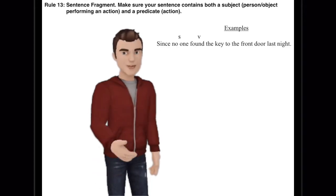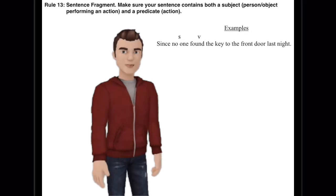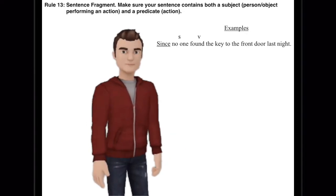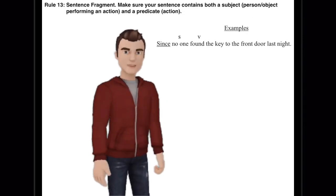The first example would be, since no one found the key to the front door last night. Now in this one, it has a subject and a verb, no one found, but there's another word right in front of that, a subordinating conjunction, which means that the entire rest of that group of words is actually a clause.